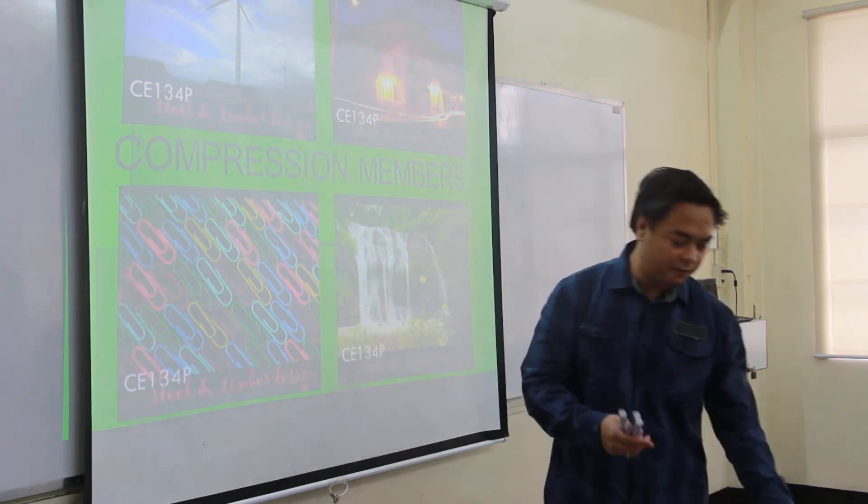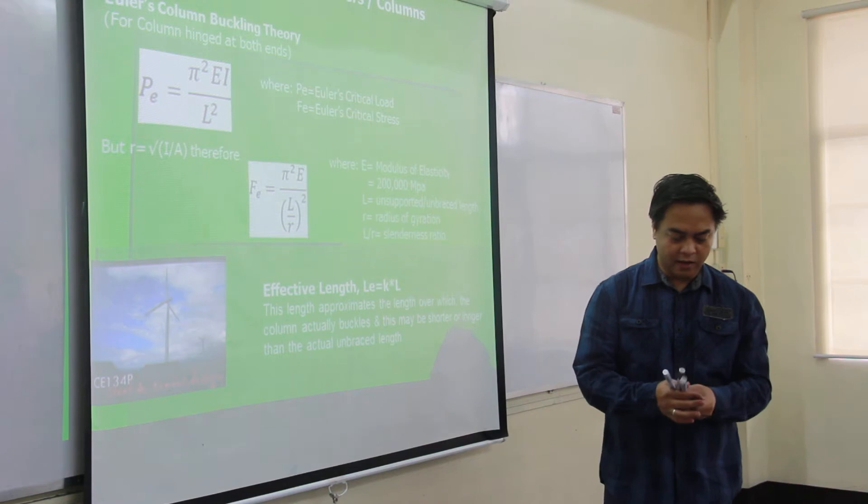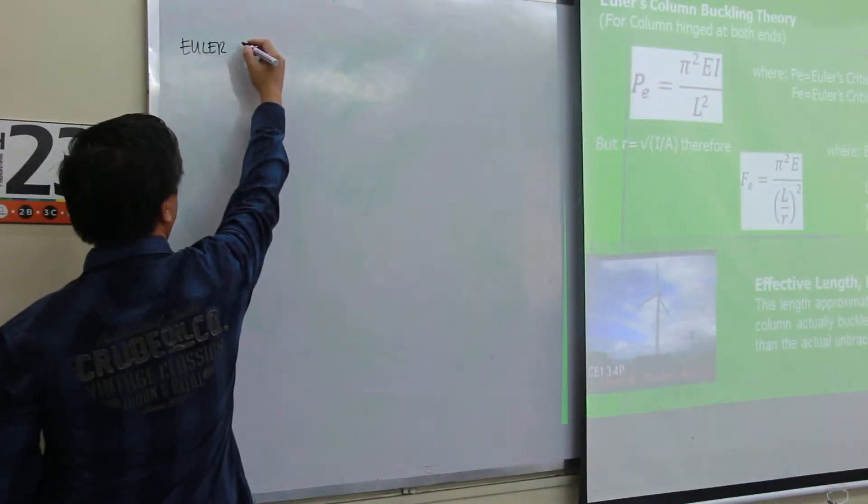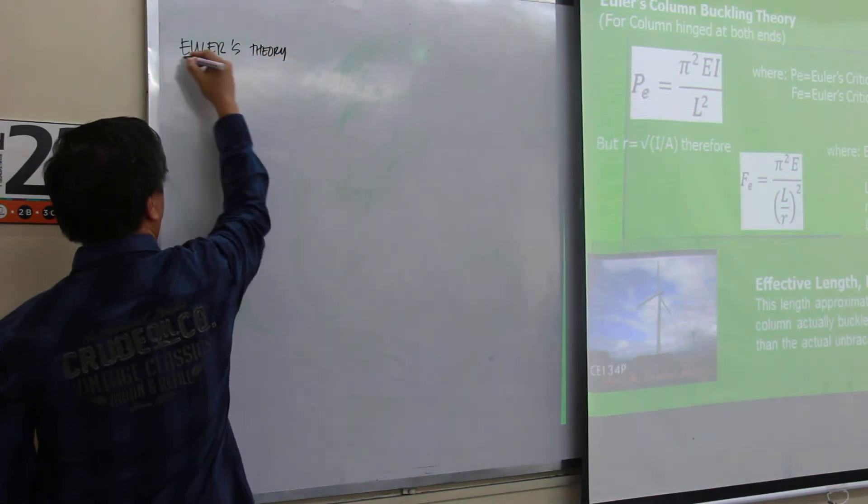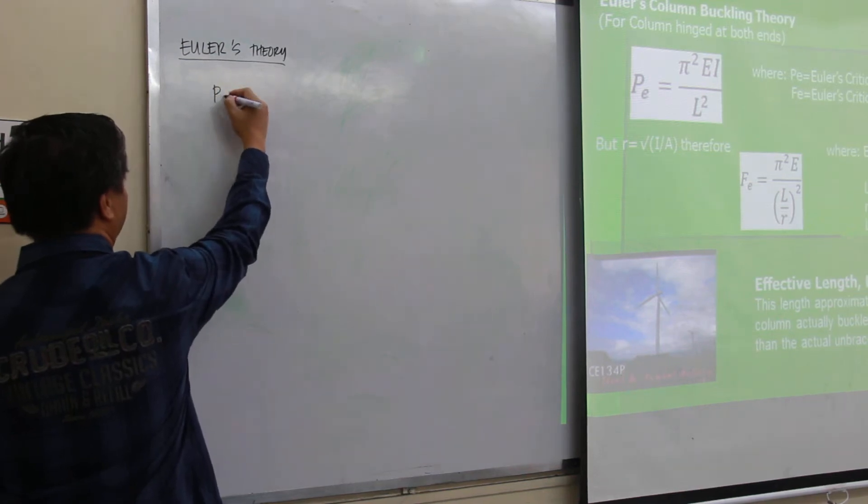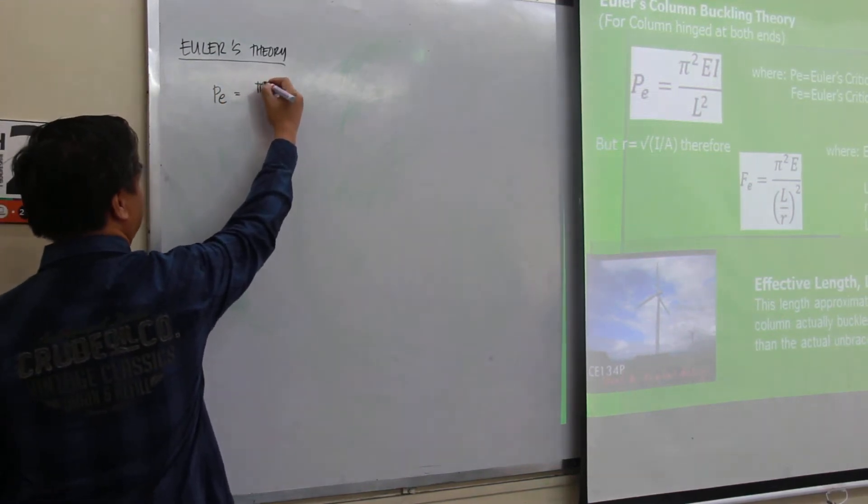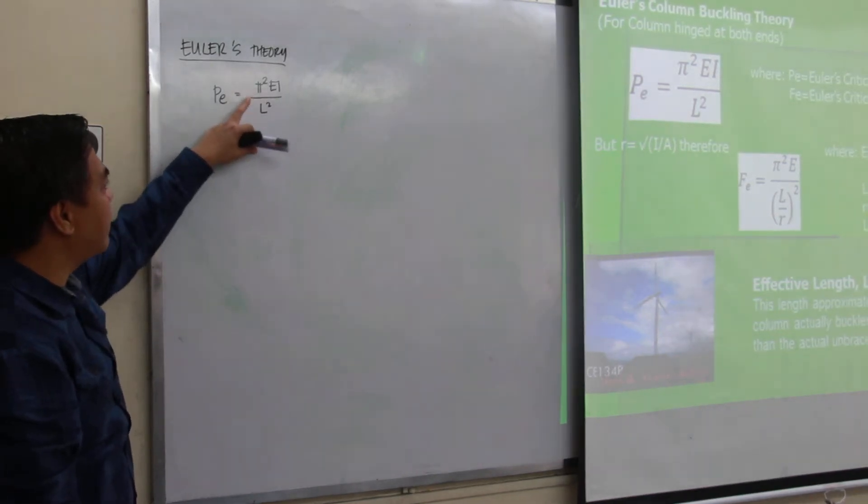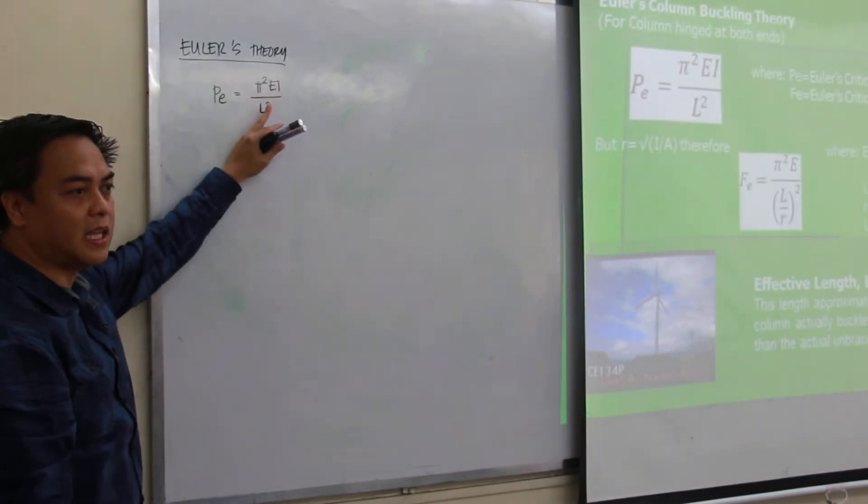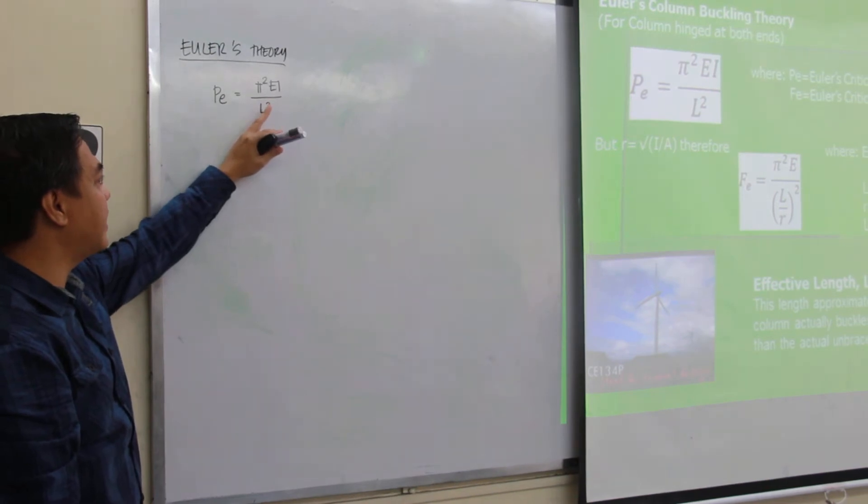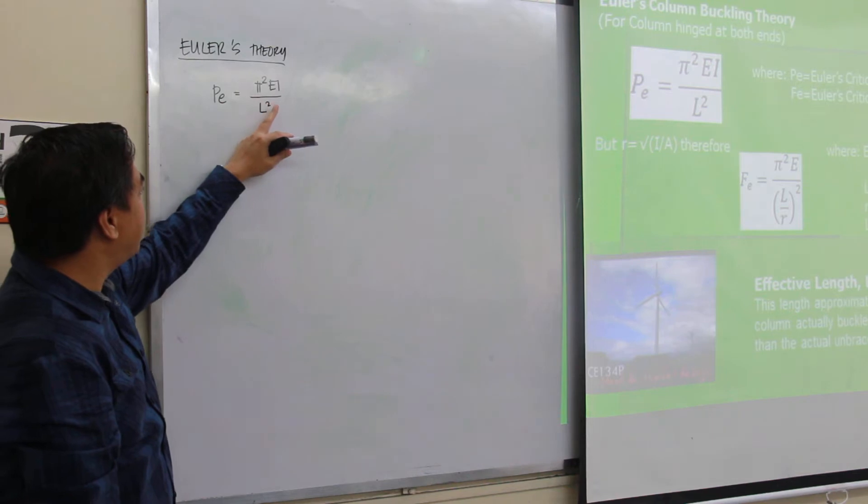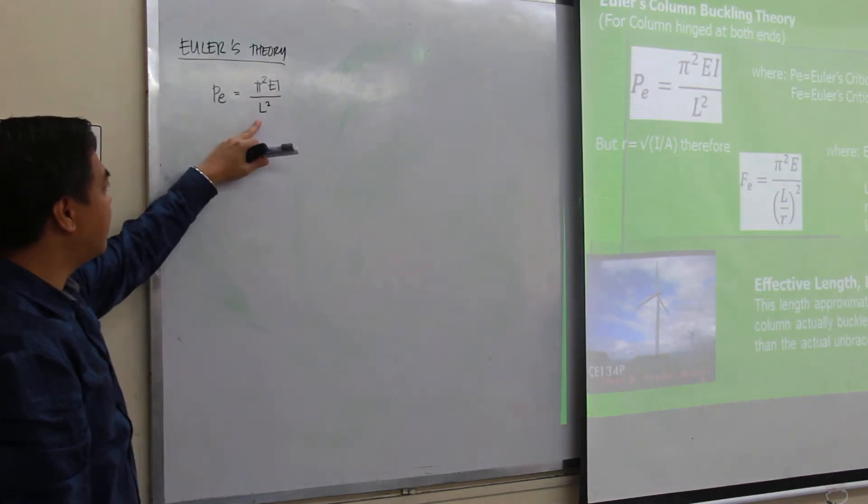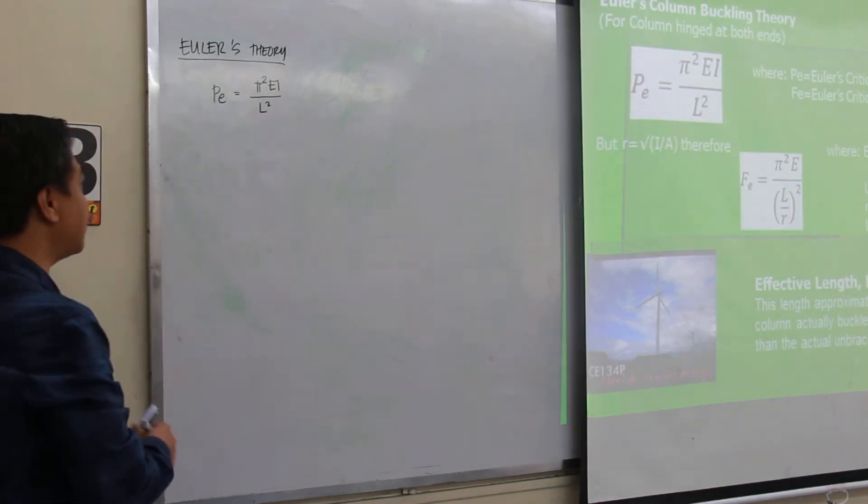And everything started from the theory set by Euler. So according to Euler, the critical load that any compression member could resist is given by this equation: pi squared EI over L squared. So looking at this equation, basically the numerator of the equation is a constant. Pi squared is a constant, E is the modulus of elasticity of the member. So for our case, we will be dealing with steel, therefore it is 200,000 megapascals. So most likely the critical load is dependent on the moment of inertia I, then inversely proportional to the square of its length. So if this is Euler's critical load, we could express also this one into Euler's critical stress.